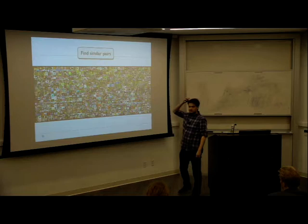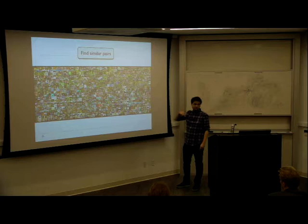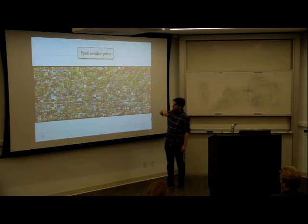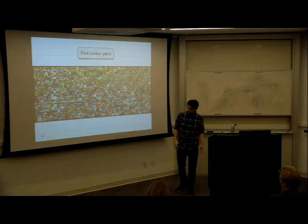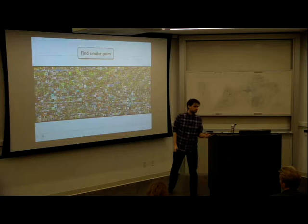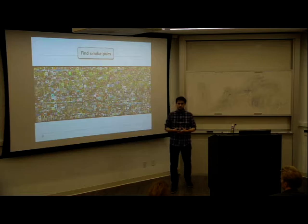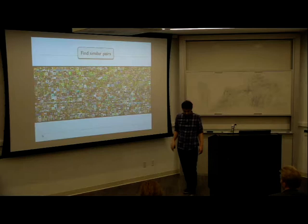Here is an example problem: finding similar pairs, similarity search — basically the problem of nearest neighbor search. At a high level, you have a bunch of objects like images from ImageNet, and you want to find similar ones — maybe for deduplication or clustering.